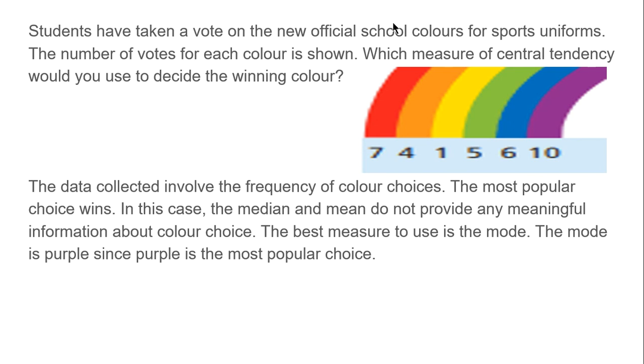Students have taken a vote for the new official colors for the sports uniforms. The number of votes for each color is shown. Which measure of central tendency would you use to decide the winning color? If you look at all of this, the data connected involves the frequency of color choices. The most popular choice wins. If we chose the median, that would be 5.5, so we would kind of have to blend these two colors together. The median doesn't make a lot of sense. The mean doesn't mean anything either.